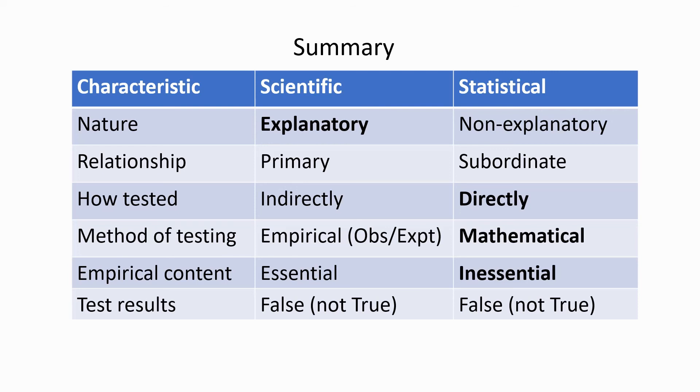The empirical content is absolutely essential to a scientific hypothesis, and the statistical hypotheses find that the empirical content is far less essential to the ways in which we test them. Both scientific and statistical hypotheses can be found false, but not shown to be true.